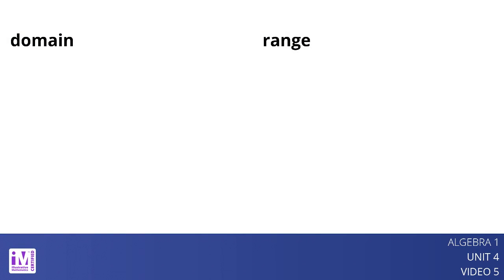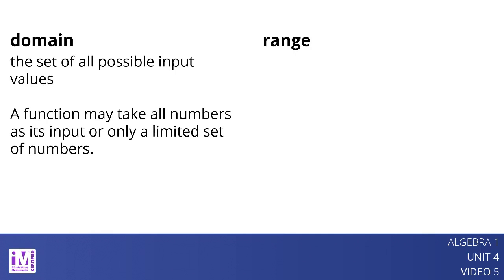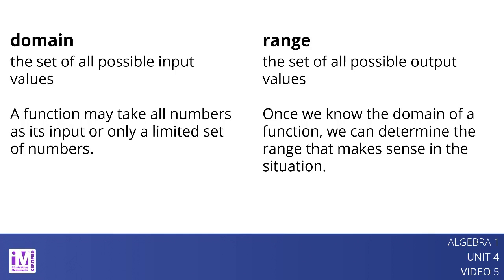The domain of a function is the set of all possible input values. Depending on the situation represented, a function may take all numbers as its input or only a limited set of numbers. The range of a function is the set of all possible output values. Once we know the domain of a function, we can determine the range that makes sense in the situation.